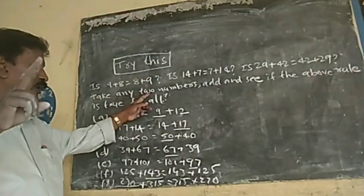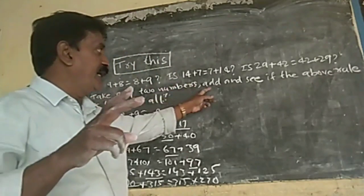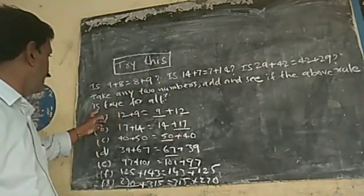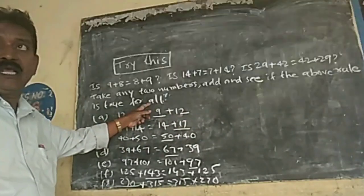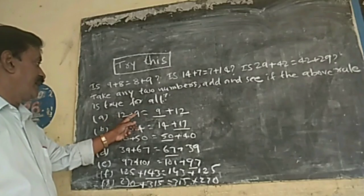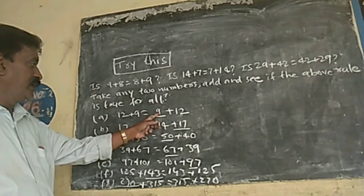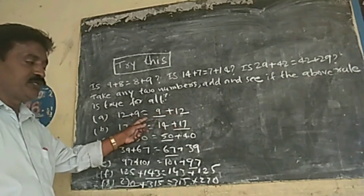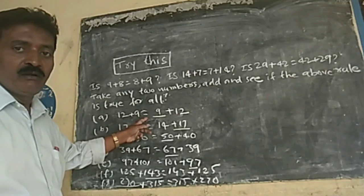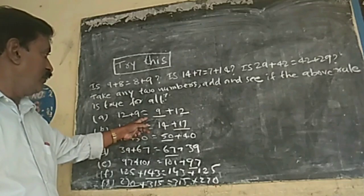Take any two numbers, add and see if the above rule is true for all. Take any two numbers. See, 12 plus 9 is equal to 9 plus 12. Is it true or false? Is it true or false? True.